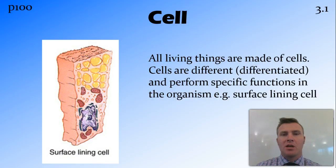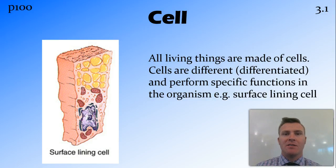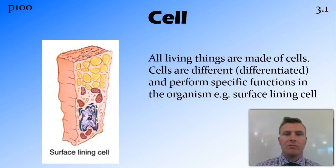We know from cell theory that all living things are made up of cells. These cells are differentiated, and these differentiated cells have specific functions that they perform within the organism. For example, a surface lining cell's job is to line the surface of an organ.